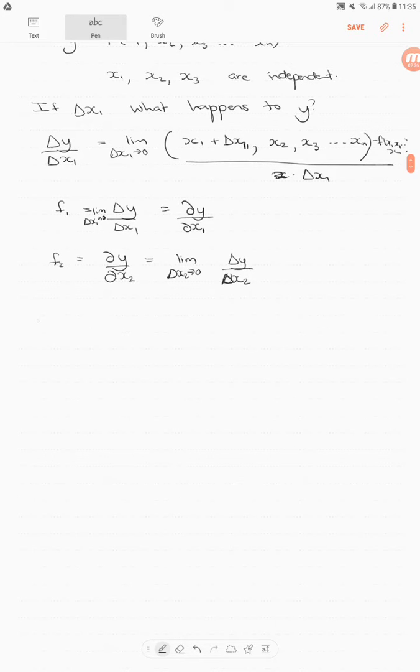So what do we do for an example? If we have y equals 6x1 plus 4x2 squared, the partial derivative ∂y/∂x1 is equal to 6. The partial derivative ∂y/∂x2 is equal to 8x2.